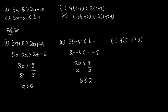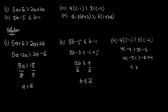For inequality (iii): 4(c minus 1) greater than 3(c minus 2). First expand the brackets: 4 times c gives 4c, and 4 times negative 1 gives negative 4, greater than 3 times c gives 3c, and 3 times negative 2 gives negative 6. I maintain 4c and bring 3c to the left as minus 3c, then send negative 4 to the right as plus 4. So 4c minus 3c gives c, greater than negative 6 plus 4, which is negative 2.